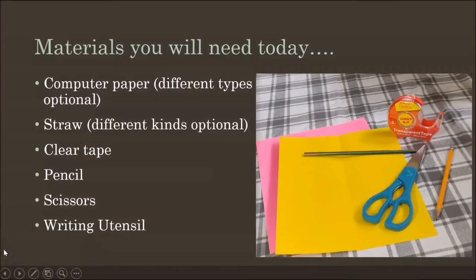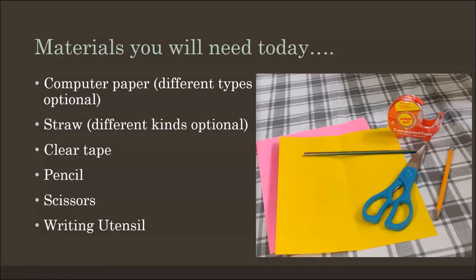To build your straw rocket, you're going to need a couple different things. Some of these are optional. You're definitely going to need some computer paper — any color will do. If you want different types of paper, because that's a variable that might impact your rocket's flight, you can have different options available. You're going to need a straw — plastic, paper, or reusable all work. You'll also need some clear tape, a pencil, scissors, and a writing utensil.